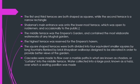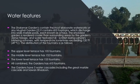The middle terrace was the emperor's garden and contained the most elaborate waterworks of any Mughal garden. The highest terrace was the emperor's harem. The square-shaped terraces were both divided into four equivalent smaller scales by long fountain planks and brick walkways designed to be elevated to provide better views of the garden. Cascades were made to flow over a marble path in what are known as chadours or curtains into the middle terrace, where water collected into a pool known as a hauz, over which a seating pavilion was built.